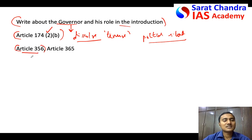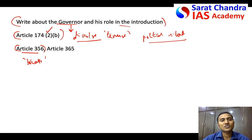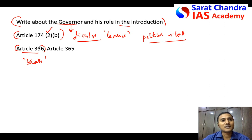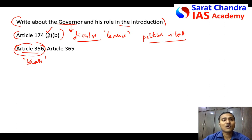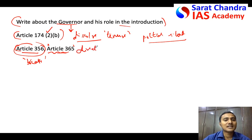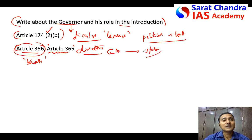Under Article 356, when the constitutional machinery of the state fails, the President of India can dissolve the state assembly, can ask Parliament to perform the role of the state assembly, or can himself pass laws for the state. This article also does not clearly mention what constitutes failure of constitutional machinery. Article 365 adds that if directions given by the center are not followed by the state, that can also be considered a failure of constitutional machinery, enabling dissolution of the assembly.